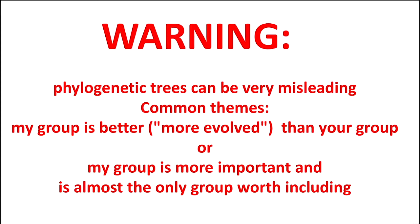Now, there's a warning. When you look at these trees, it's easy to be misled. Phylogenetic trees can be very misleading. The common themes of how you will be misled is the people who make the trees have thought, my group is better or more evolved than your group. I'm betterism. Or, my group is more important and is almost the only group worth including. So, there's examples of this everywhere in the literature, particularly in the popular science literature. Here's one example of a racist tree. You can see the Greek-looking statue on the right is supposed to be better than everything else or more evolved. And you can see that we're supposed to be more evolved than fish or opossums.